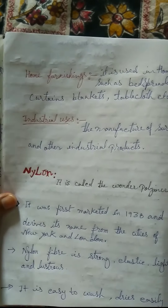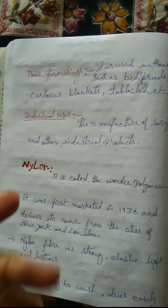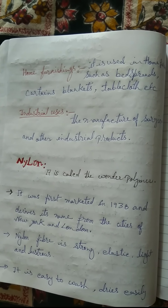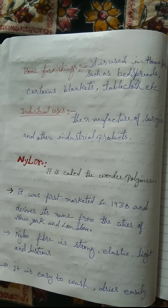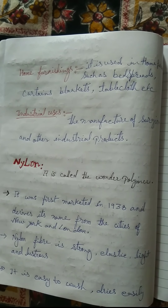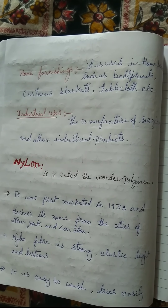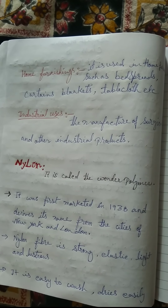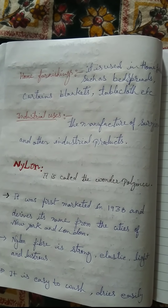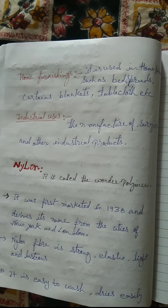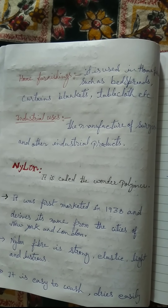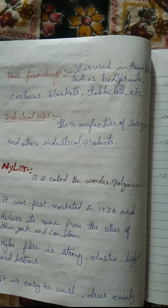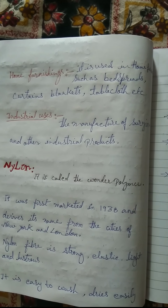Home furnishing: rayon is used in home furnishings such as bedspreads, curtains, blankets, and tablecloths. Industrial uses: it is used in the manufacturing of surgical and other industrial products.